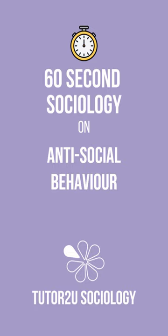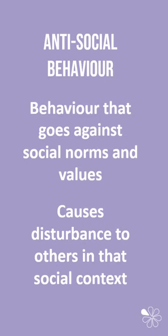In this 60 Second Sociology, we're going to focus on antisocial behaviour. Antisocial behaviour is a term given by sociologists to behaviour that goes against social norms and values. In practice, this is behaviour that causes a disturbance to others in that social context and could be seen as forms of harassment or potential harm.